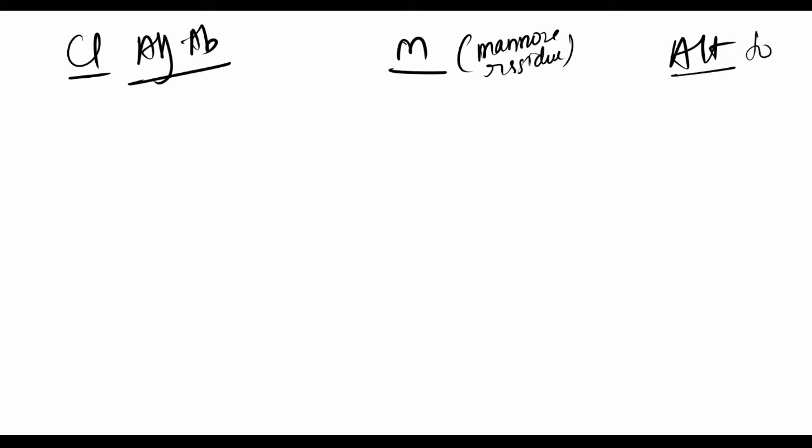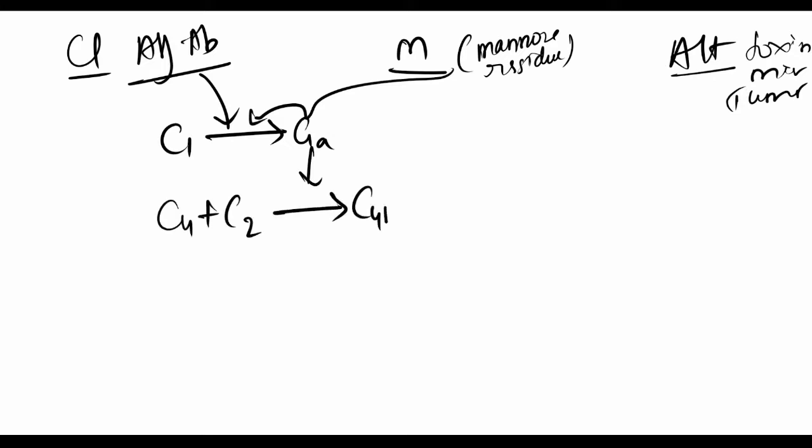Classical and mannose start with C1 getting converted to C1a. The stimulus causes this conversion, and C1a helps in attachment of C4 to C2, leading to formation of C4b2a, which then converts C3 to C3a and C3b. We're going to call C4b2a as C3 convertase because it's helping C3 convert. This is common for both pathways.